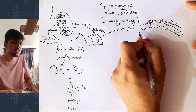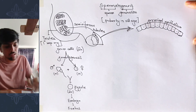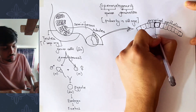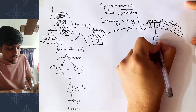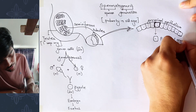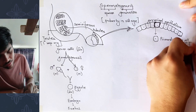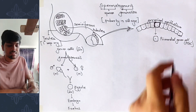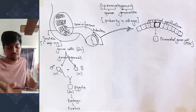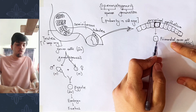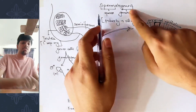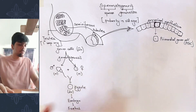Among the several germ cells, let's pick one single germ cell. This germ cell is known as the primordial germ cell. A germ cell is simply the cell that gives rise to a gamete. Since this germ cell is present at the very beginning — at the very primary stage — it is called the primordial germ cell. This primordial germ cell goes through a number of steps to form sperm, and these steps make up spermatogenesis.